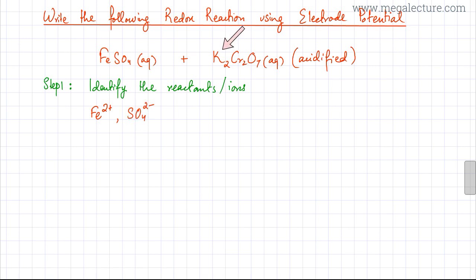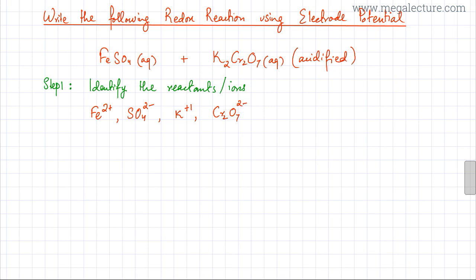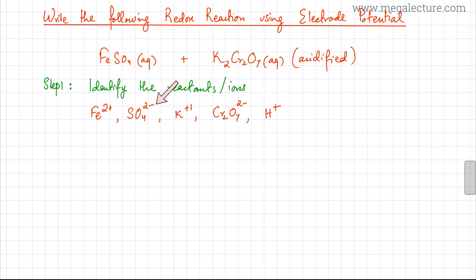Then in K2Cr2O7, K is in group 1, so K is +1 and Cr2O7 would have a charge of 2-. So the other ions are K+1 and dichromate, Cr2O7 2-. Acidified means H+1 ions are present as well. So these are my five ions: Fe2+, SO4 2-, K+1, dichromate ion, and H+1.